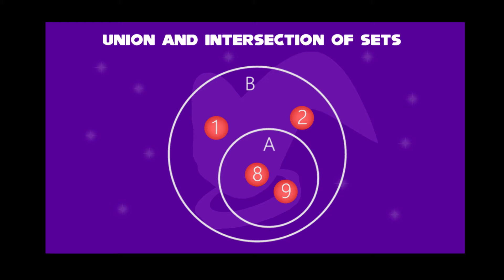Now we will move on to containment, as B contains A. Set A contains 8 and 9, and set B contains 1 and 2. We further note that X belongs to B, but X does not belong to A.